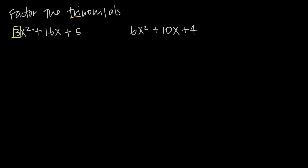So what do we do when we have a coefficient on the x squared? We do the same thing we did before when we didn't have the coefficient. It just gets a little more complicated because we have to pay attention to the factors of 3 as well as the factors of 5. The factors of 3 are 3 and 1, and the only factors of 5 are 5 and 1. We know we're going to factor into two binomial terms, so we can say 3x and x, since 3x times x gives us 3x squared.